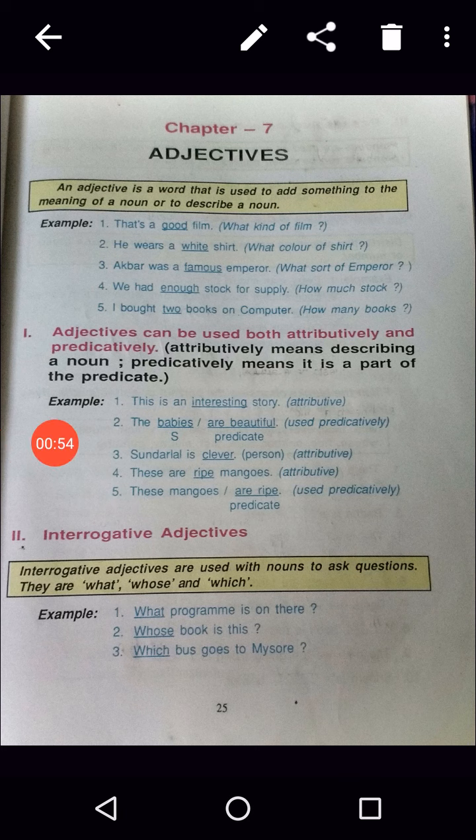Adjectives can be used both attributively and predicatively. Attributively means describing a noun. Predicatively means it is part of a predicate. See the example: This is an interesting story — here 'interesting' is used attributively. Second: The babies are beautiful — used predicatively.